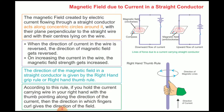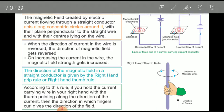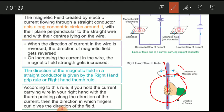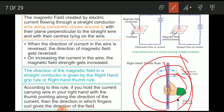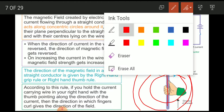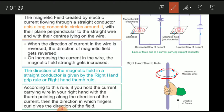Next: magnetic field due to a current in a straight conductor. If you have a conductor, the magnetic field lines will be in a circular shape, and the right-hand rule is used to find the direction of these lines of force. The magnetic field created by electric current flowing through a straight conductor acts along concentric circles around it, with their planes perpendicular to the straight wire and their centers lying on the wire.